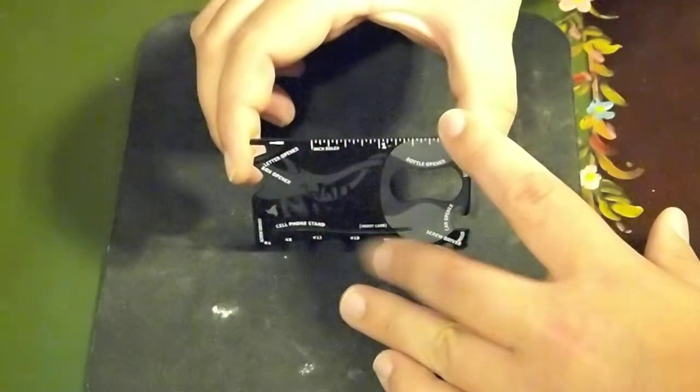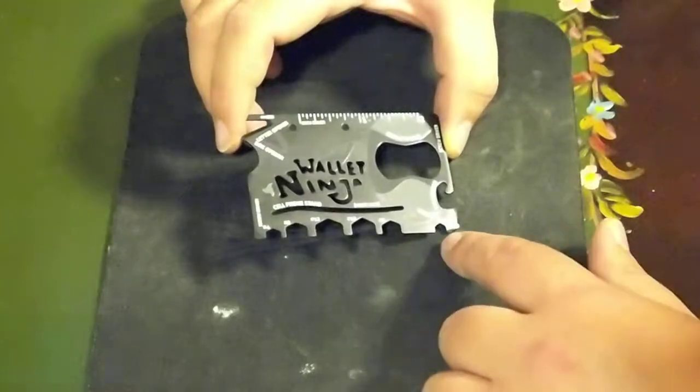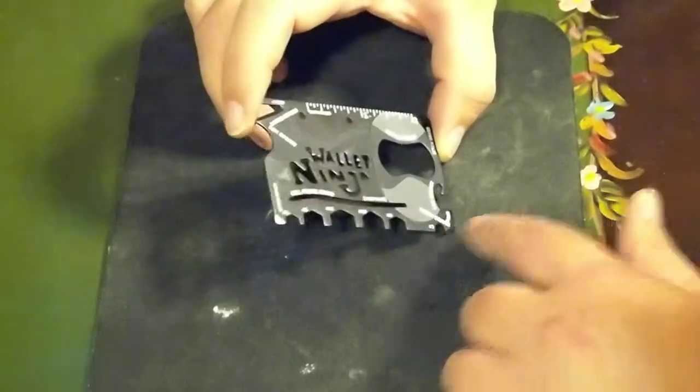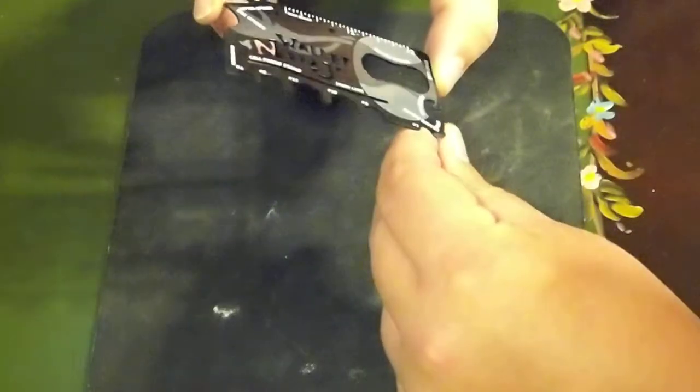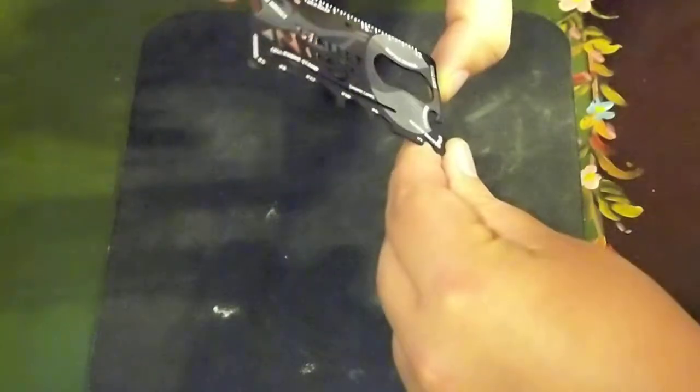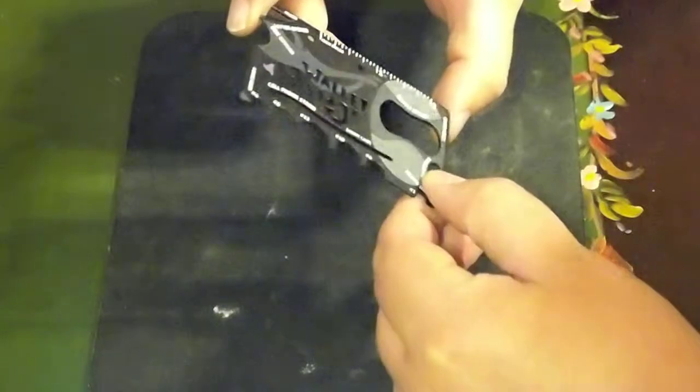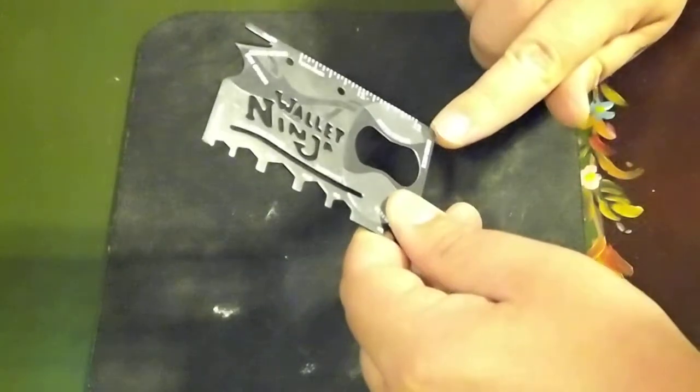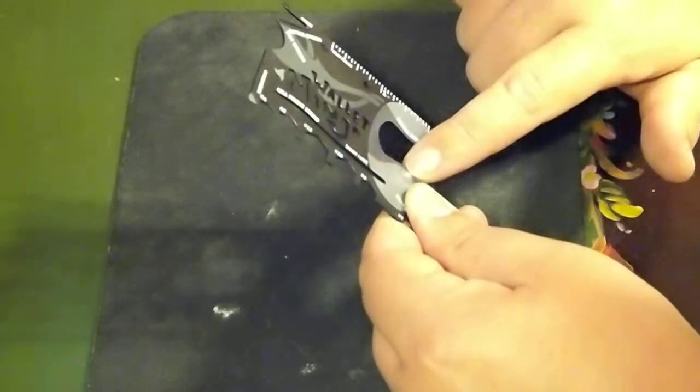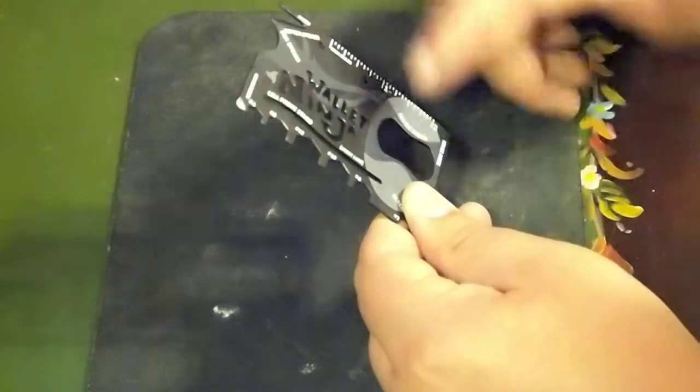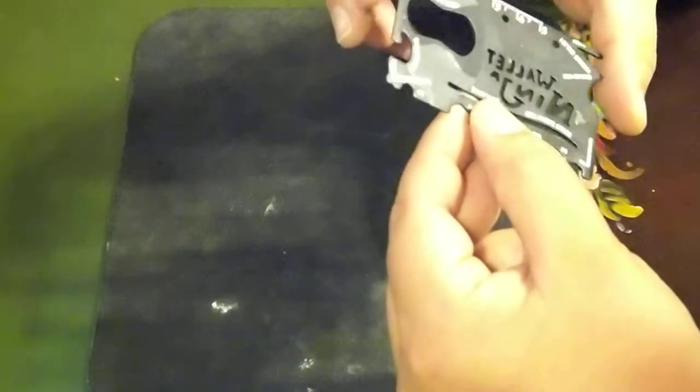As you can see, it's got a screwdriver, a peeler right here at the end. It says can opener right here, another screwdriver here at the corner, and then the bottle opener. So that's all the tools for this little baby.